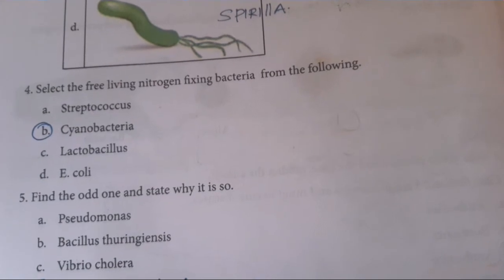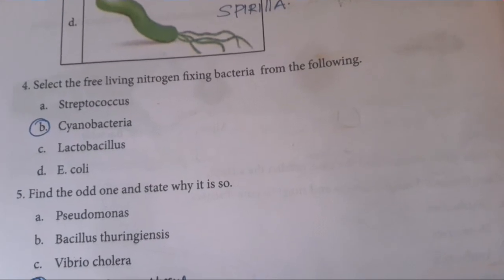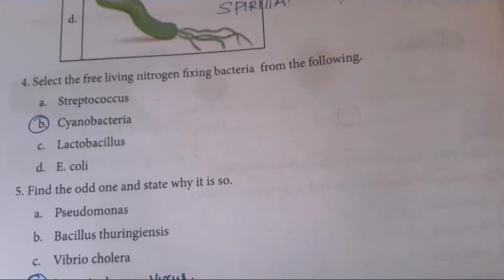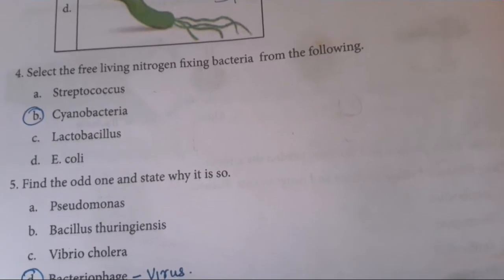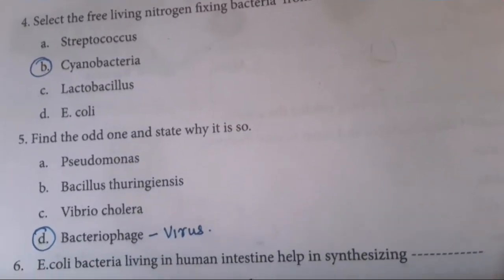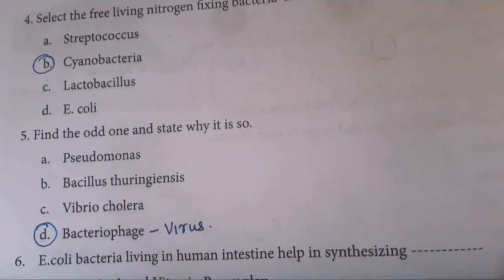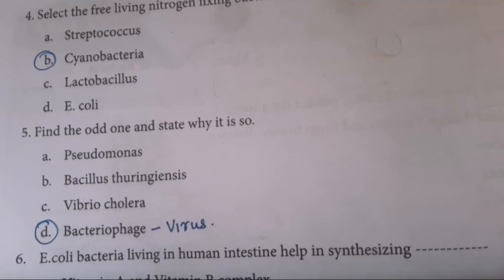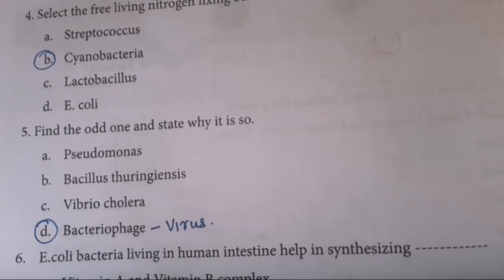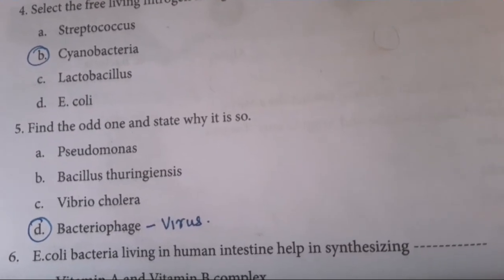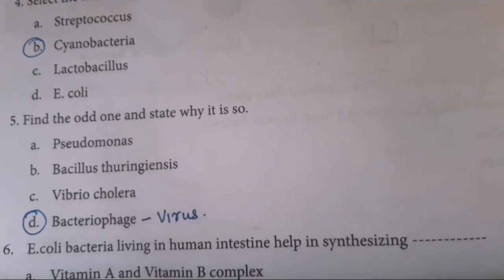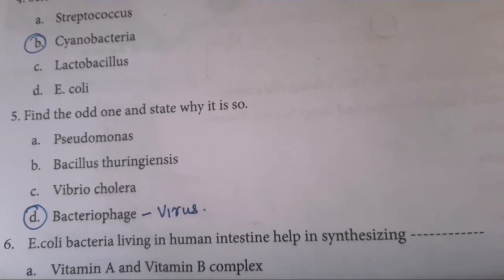Select the free-living nitrogen-fixing bacteria from the following. The answer is cyanobacteria. Find the odd one out and state why. The options are Pseudomonas, Bacillus, Vibrio, and Bacteriophage. Bacteriophage is a virus, so the answer is D.